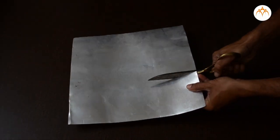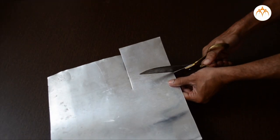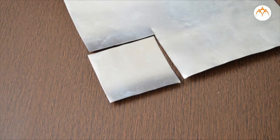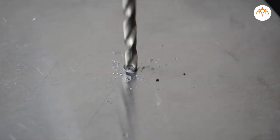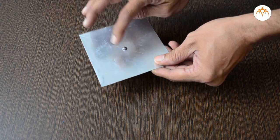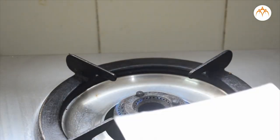We saw that the rod expands on heating and its length increases. What about the area? Let us take this aluminum sheet and make a small hole. This steel bulb is not going through the hole right now. What will happen if I heat it?